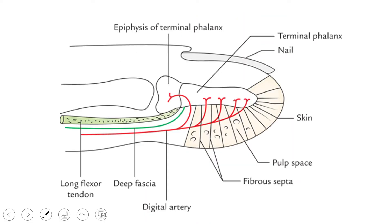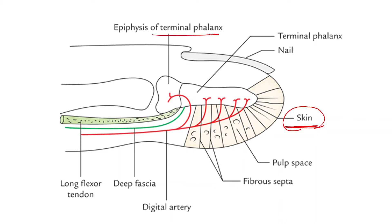Moving on to the pulp space of the fingers: this pulp space is a potential space occupying the distal phalangeal region of the digit. The pulp spaces of the fingers are the spaces which intervene between the palmar skin and the distal phalanx — a space seen between the skin and the terminal phalanx of each digit. This space is occupied by many fibers which subdivide it into numerous tight compartments containing subcutaneous fat and blood vessels.